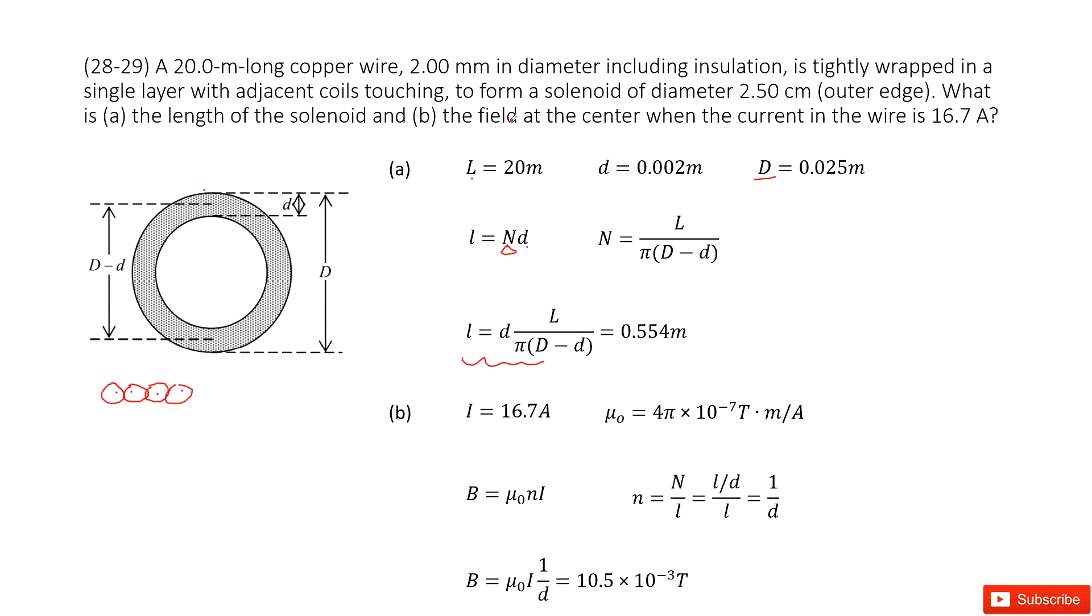The second part, calculate the field at the center when the current is given. So now we need to know the magnetic field at the center of this solenoid. That is μ₀nI. I is given, μ₀ is given. So you need to find this small n. This small n is how many turns of this solenoid divided by the length of solenoid is 1 over d. Now you input all the given quantity. Get answers there.